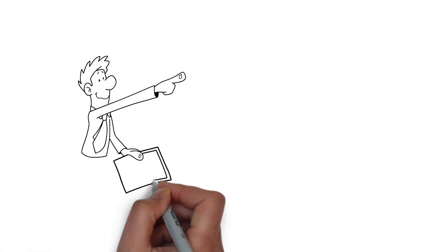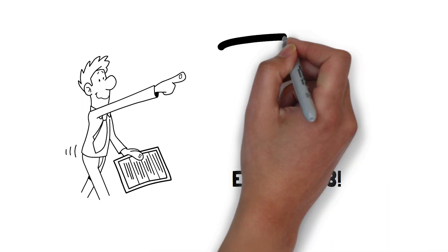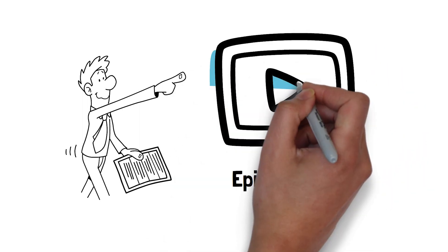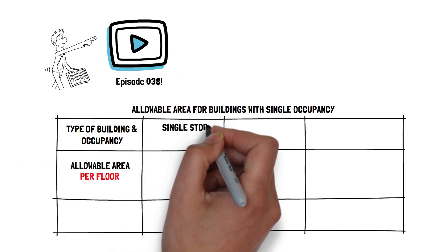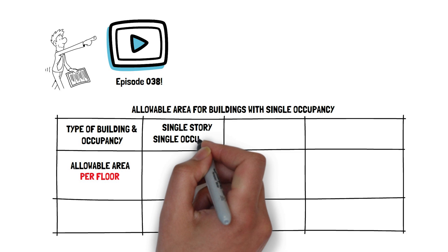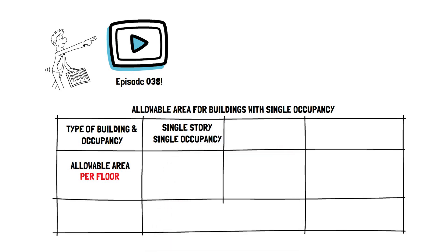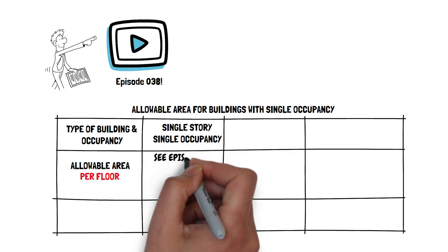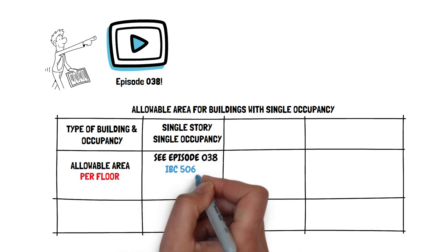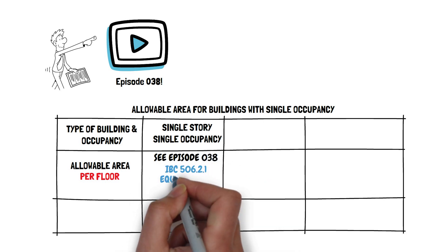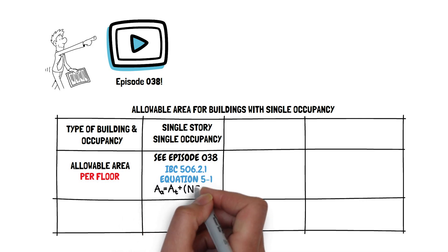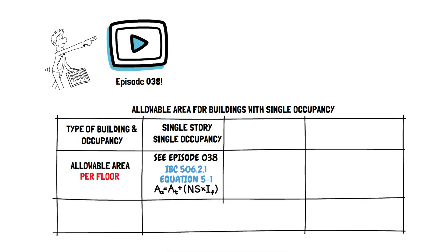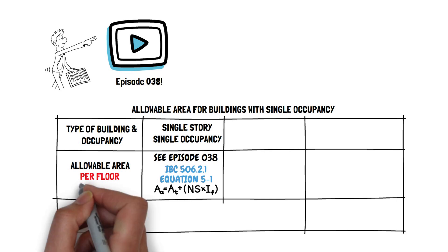Let's start with where we left off in episode 38. In that episode, we provided details on how to find out the allowable area for a single-story building with a single occupancy. Video 38 explained in detail IBC Section 506.2.1 and Equation 5.1, which was AA equals AT plus NS times IF. That formula provides most of what you need to know to figure the allowable area per floor in a building.